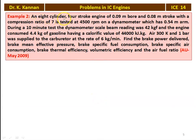Now example number 2. An 8-cylinder 4-stroke engine of 0.09 m bore and 0.08 m stroke with a compression ratio of 7 is tested at 4,000 RPM on a dynamometer with a 0.54 m arm length. During a 10-minute test the dynamometer scale beam reading was 42 kgf and the engine consumed 4.4 kg of gasoline with calorific value 44,000 kJ/kg. This is from the May 2009 question paper.